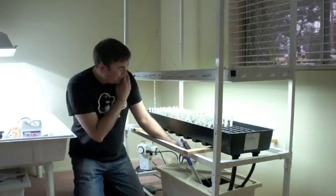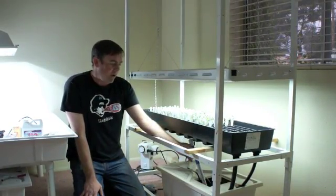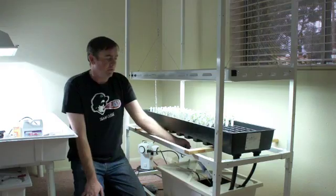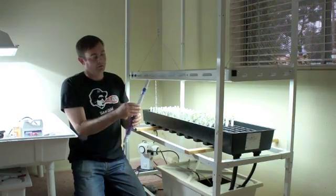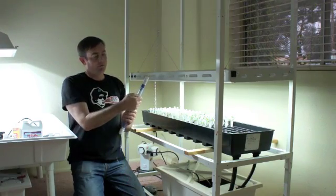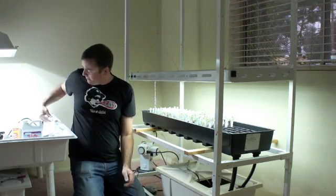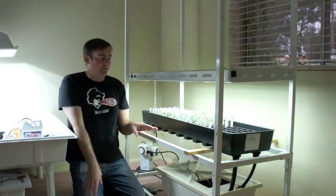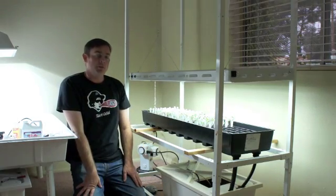Right now, since these seedlings are about two weeks in, it's about 500 parts per million on the meter. You can see the little blue light blinking there for 500 parts per million. And then we adjust the pH to about 6.2.